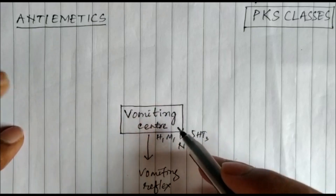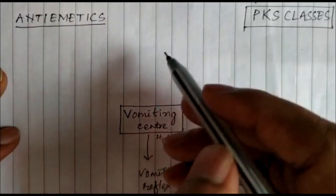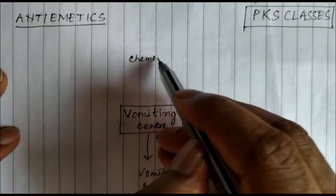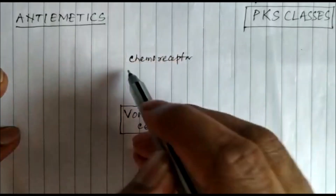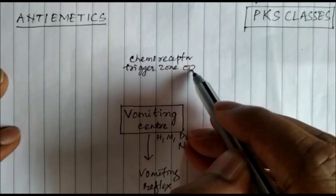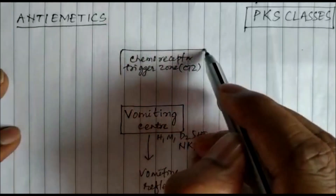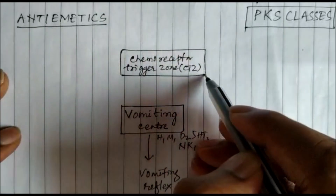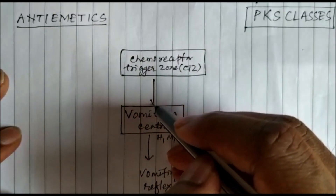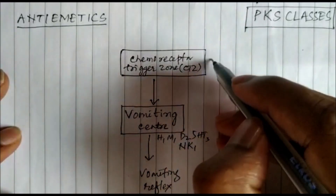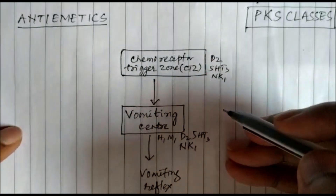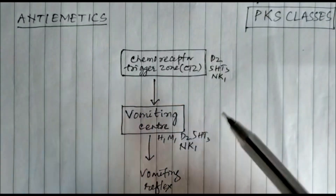All these receptors are present in the vomiting center. Information to the vomiting center receptors comes from the chemoreceptor trigger zone (CTZ). The CTZ is present in the area postrema, below the fourth ventricle, and the receptors here include D2, 5HT3, NK1, and others.